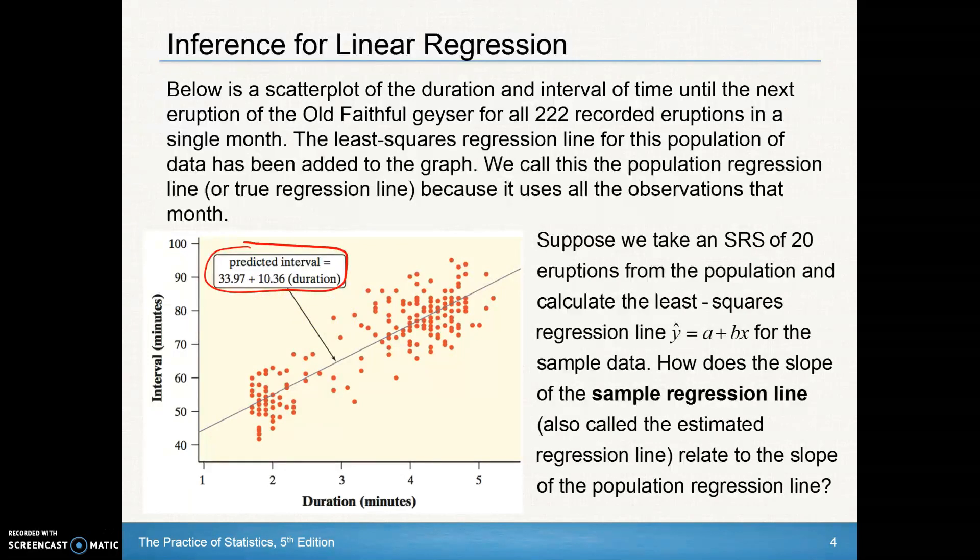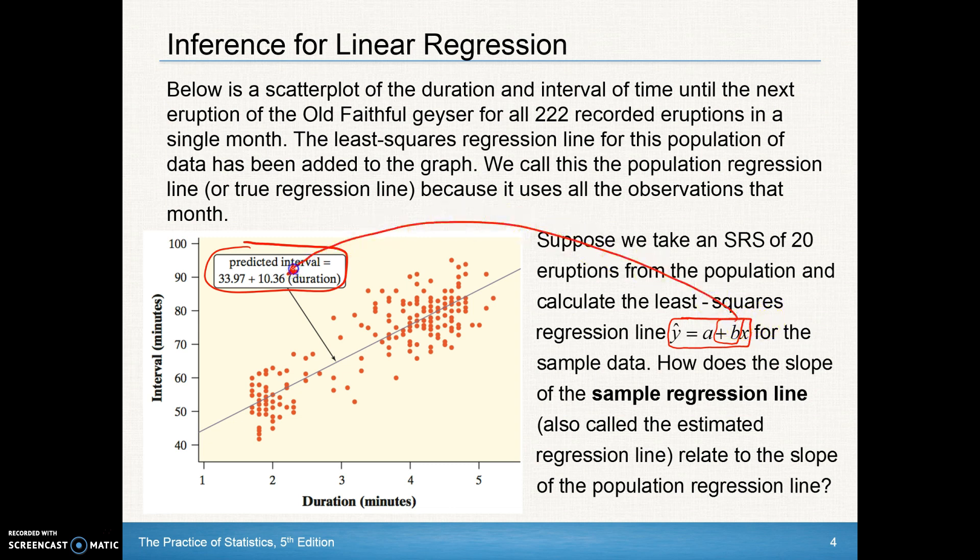Let's suppose we take an SRS of 20 eruptions from the population and calculate the least squared regression line for our 20. We'll have some y hat, that's our sample y hat, or our predicted y value based off of our sample data. So how does the slope of the sample regression line relate to the slope of the population regression line? We usually denote the slope of the population regression line as the Greek letter beta.